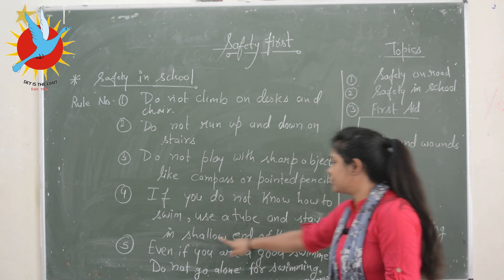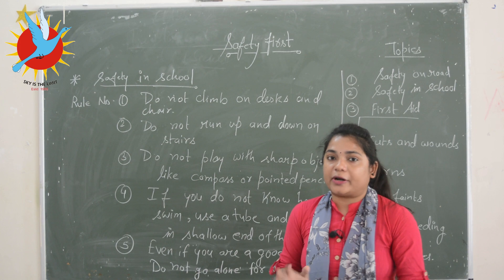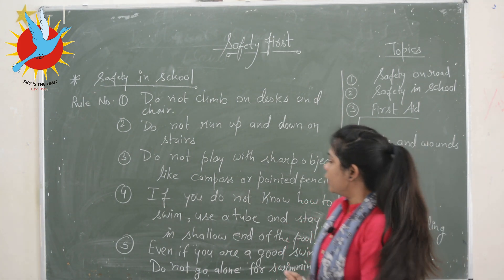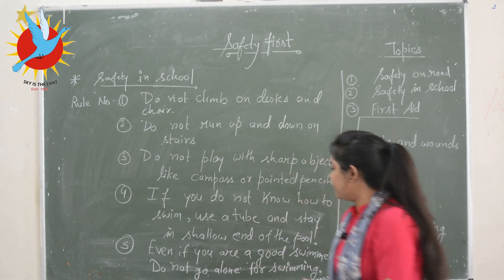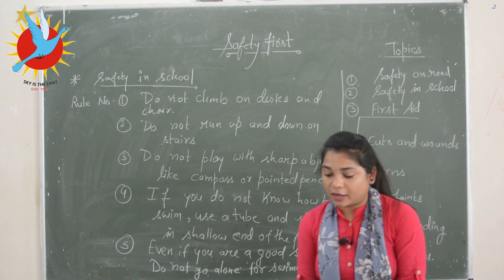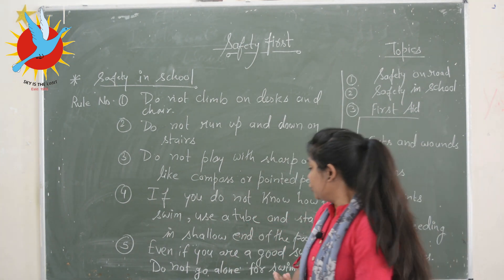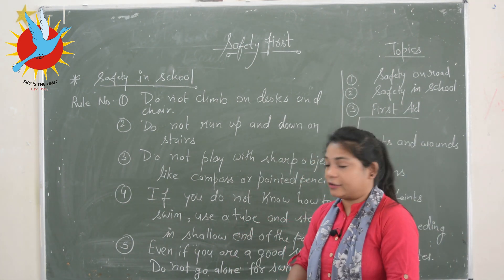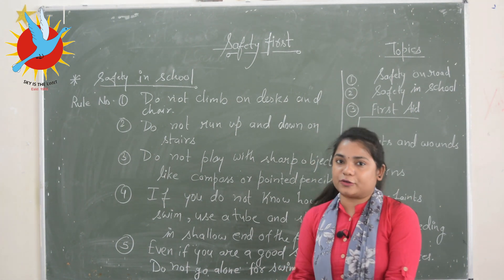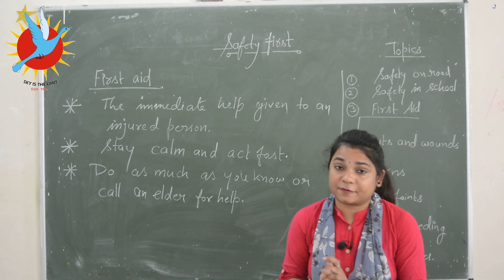Rule number four: if you do not know how to swim, use a tube and stay in the shallow end of the pool. To avoid any accident, stay with your trainer only. Rule number five: even if you are a good swimmer, do not go alone for swimming — accidents can happen anytime, anywhere. Go with your trainer, a teacher, or a friend.